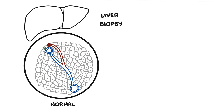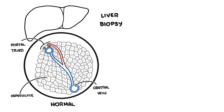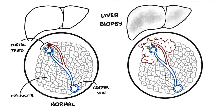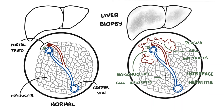A liver biopsy is necessary to establish a diagnosis of autoimmune hepatitis. The histological appearance of a normal liver shows the portal triad, the central vein, and the hepatocytes. With autoimmune hepatitis, you see dense mononuclear and plasma cell infiltration of the portal areas, which expands to the liver lobules, leading to damage of the hepatocytes at the periphery with erosion at the edges — this is termed interface hepatitis. However, there is no single histological feature that is pathognomonic for autoimmune hepatitis.